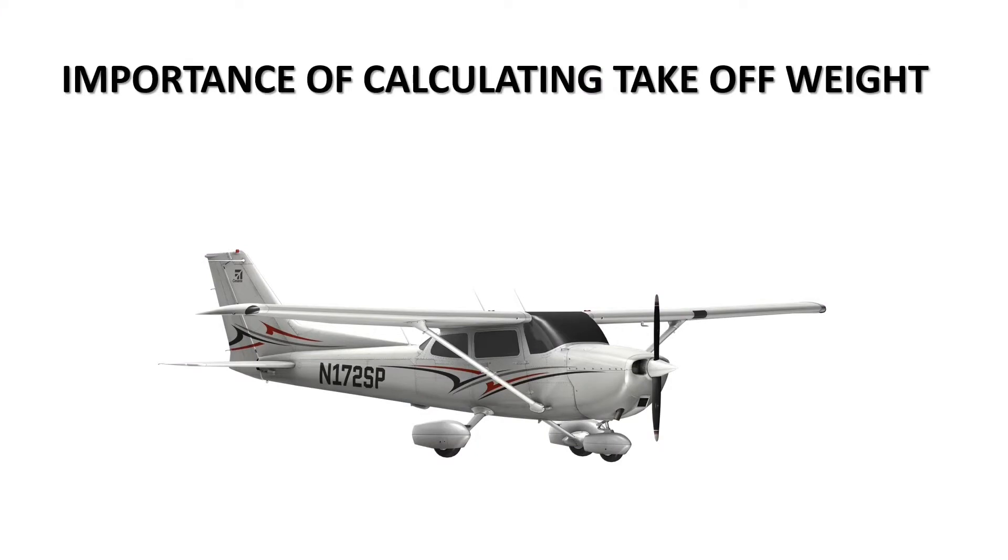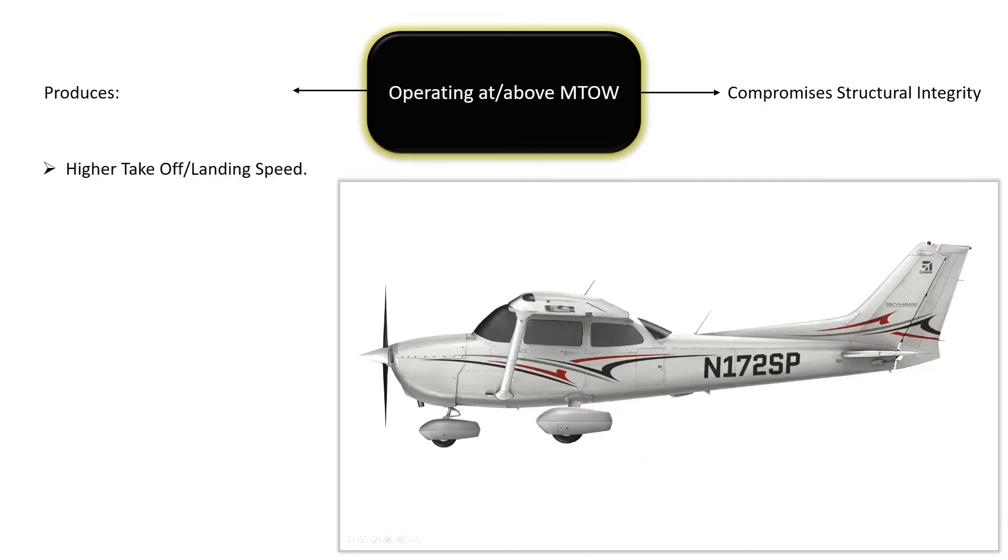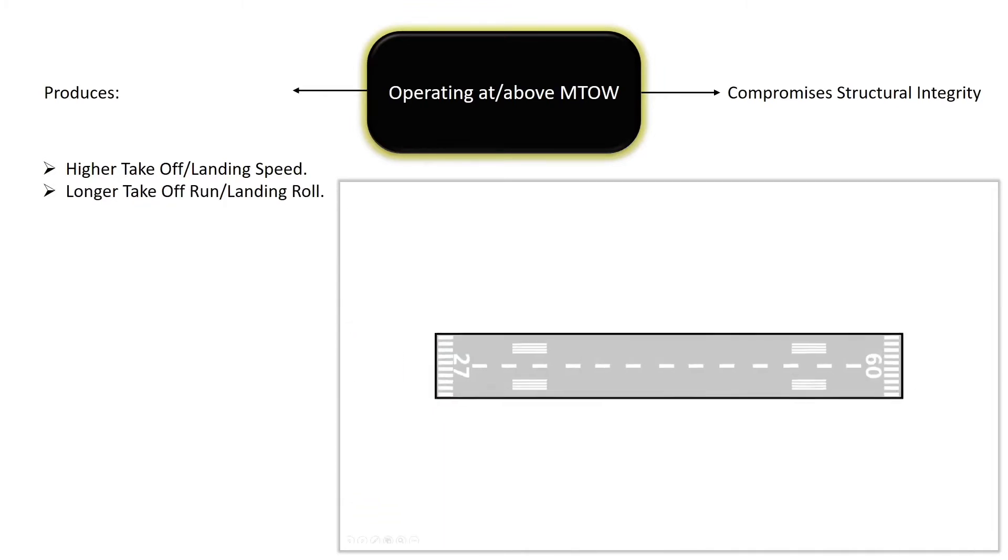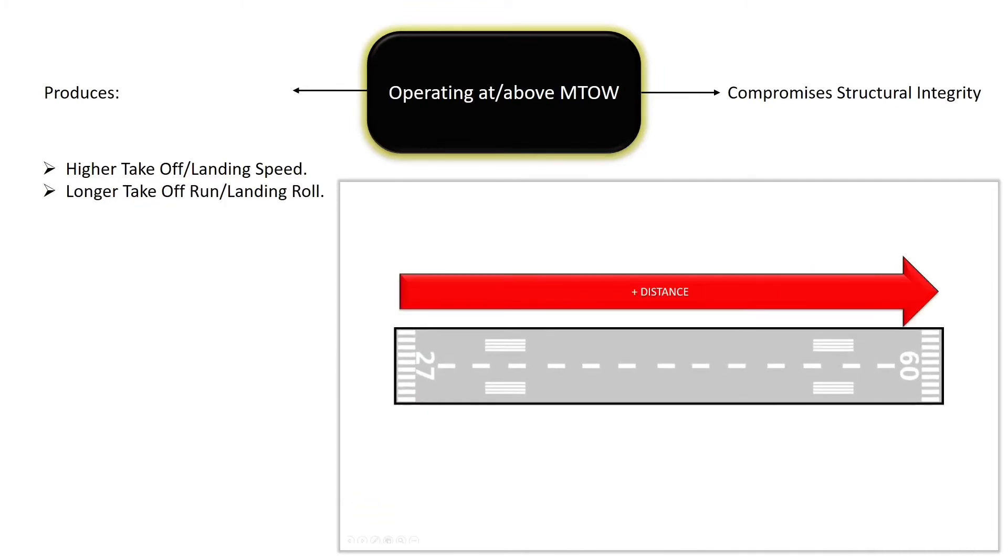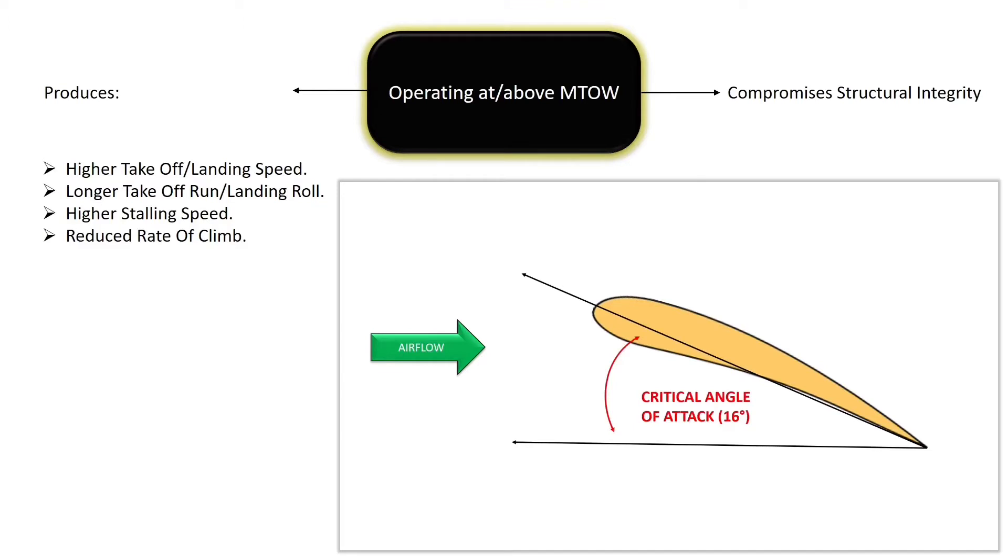The maximum takeoff weight is a limitation placed on the aircraft by its manufacturer. It's a fixed weight. Operating close to or above the maximum takeoff weight compromises the structural integrity and produces a higher takeoff and landing speed since more lift is needed to counteract weight, which results in a longer takeoff run and landing roll, a higher stalling speed and reduced rate of climb since the aircraft is already close to the critical angle of attack, the angle at which the wing stalls trying to maintain flight.